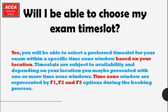Time slots are subject to availability and depending on your location you may be presented with one or more time zone windows. Time zone windows are represented by F1, F2, and F3 options during the booking process. Usually F1 is a morning time slot, F2 is an afternoon time slot, and F3 is the evening batch. Please select F1, F2, or F3 as per your convenience.